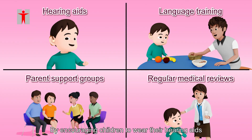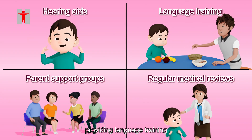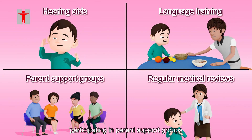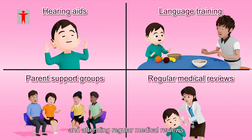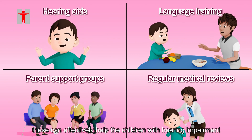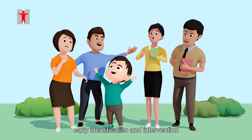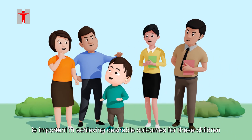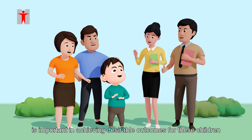By encouraging children to wear their hearing aids, providing language training, participating in parent support groups, and attending regular medical reviews, these can effectively help the children with hearing impairment. In conclusion, early identification and intervention is important in achieving desirable outcomes for these children.